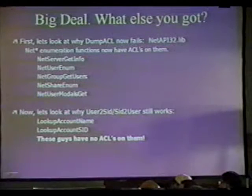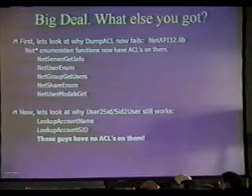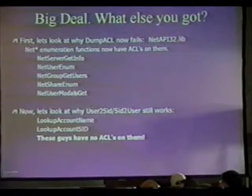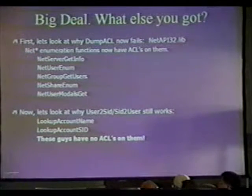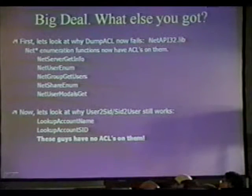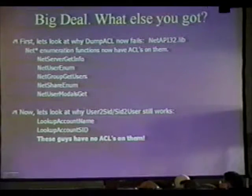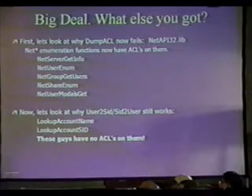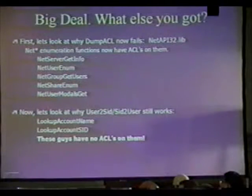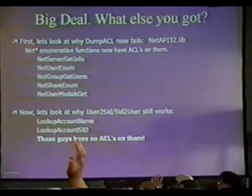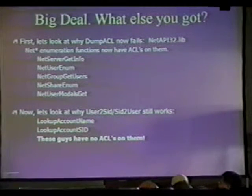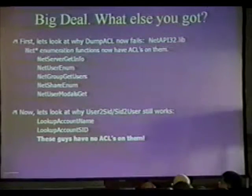If you can connect to a box, you can say lookup account SID for guest — we know guest exists on that box, you can't rename or delete it. Bang, you get the fully qualified SID for that domain. We know that all they've done is take the RID, the last sub-authority portion of the SID, so we take off the guest RID, put 500 on it, resubmit that entire SID, and it tells us the name of the administrator account. Because 500 is always the administrator. So no matter who renames their administrator account, we can always look it up — you can't stop us from doing that.